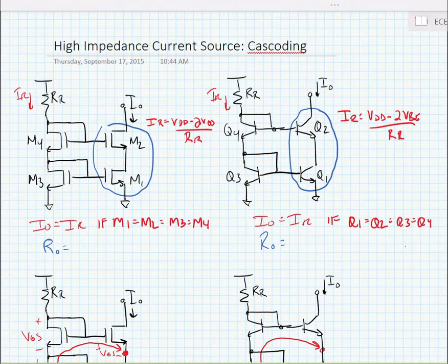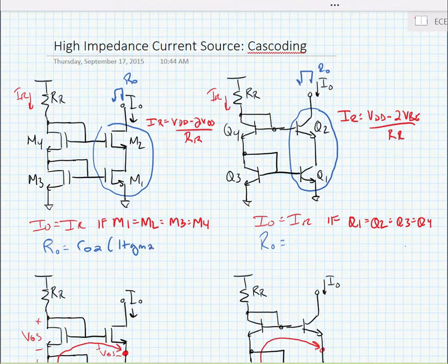Now the reason we did this is to try and increase the output resistance of the current source. So we're going to look to see what the output resistance of these current sources are. And indeed the output resistance is equal to RO2 times 1 plus GM2 times RO1.